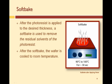After the resist is applied to the desired thickness, a softbake is used to remove the residual solvents of the photoresist. After softbake, the wafer is cooled to room temperature before being transferred to the expose equipment.